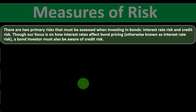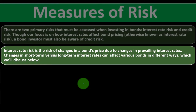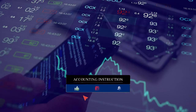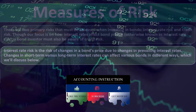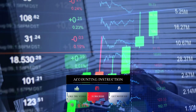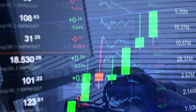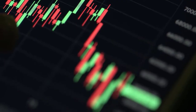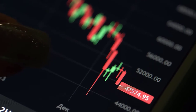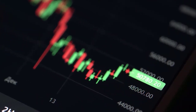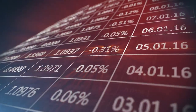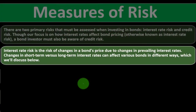There are two primary risks when investing in bonds: interest rate risk and credit risk. Our focus is on interest rate risk — the risk of changes in a bond's price due to changes in prevailing interest rates. When you invest in a bond you lock in a fixed interest rate. If market rates rise above that locked-in rate, you could have invested elsewhere at a higher return. If market rates fall, locking in your rate is advantageous.